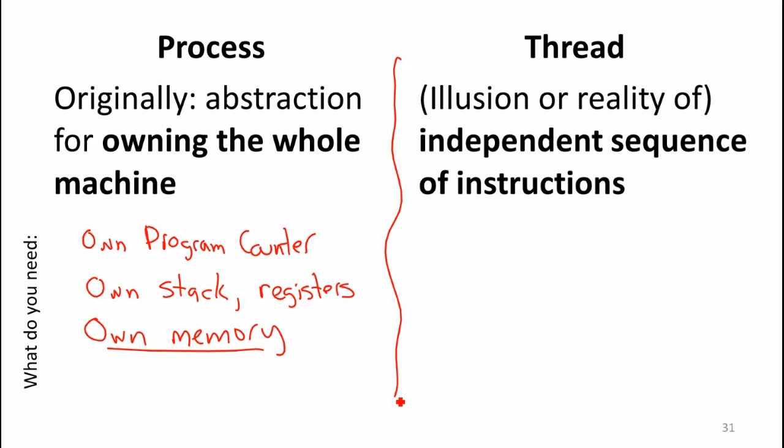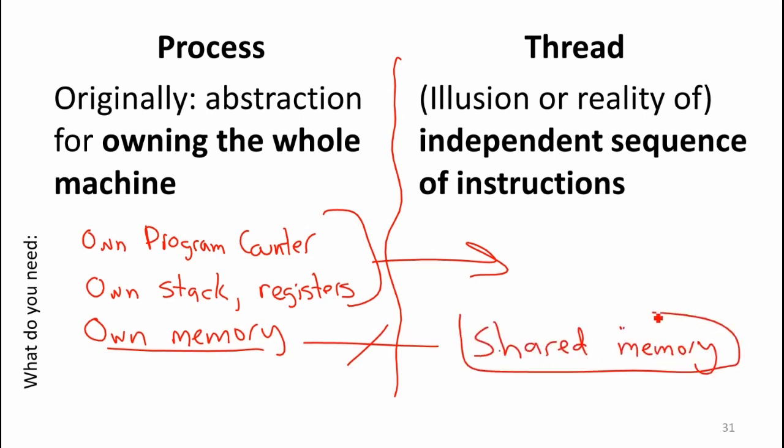Good. We need the first two things. We need both of these. But instead of our own memory, we're sharing the same memory as the process that created that thread. So that's the big difference between a process and a thread, whether you have your own memory space.